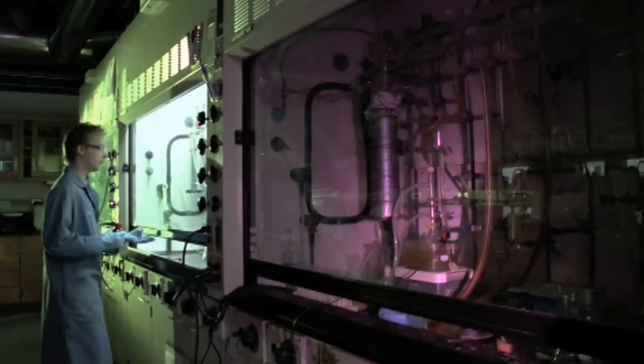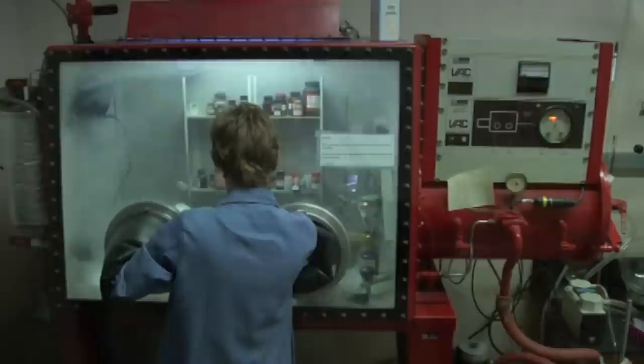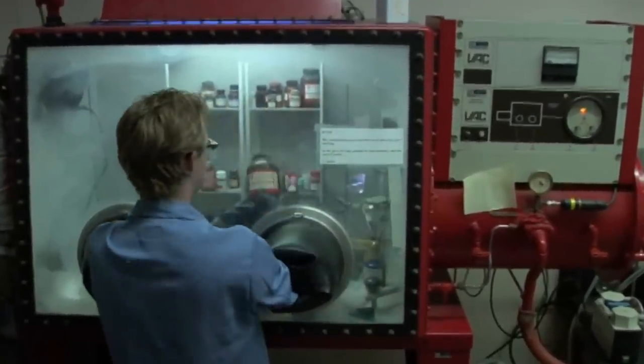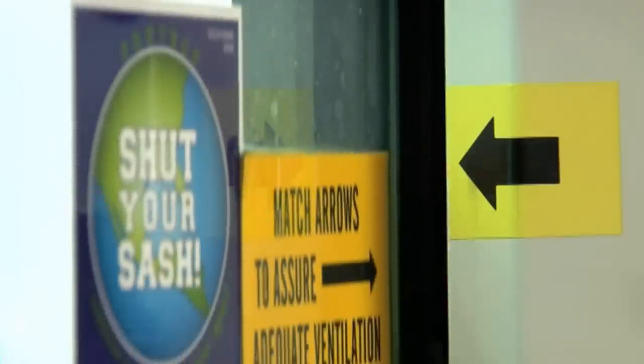While working with pyrophoric liquids, you must use one of two mechanical engineering devices: a fume hood or a glove box with an inert atmosphere. Pyrophoric transfer processes are not to occur anywhere outside of these two workspaces. While working in the fume hood, make sure that the sash level is at the lowest possible position.